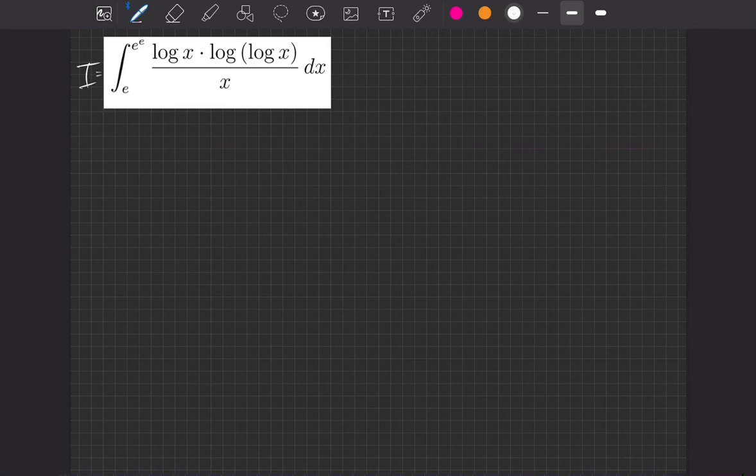Hello. Today I'm going to show you this integral question. It's from MIT's Integration Bee in 2020. It's the qualifying round and it's question number three. So we need to integrate log x multiplied by log of log x all divided by x with respect to x from e up to e to the e.